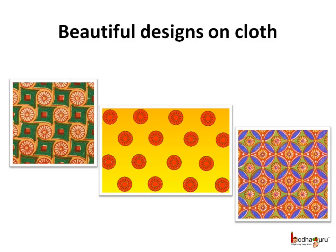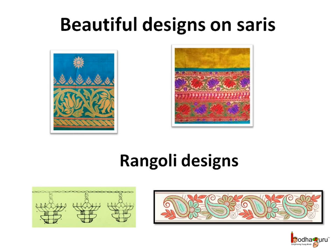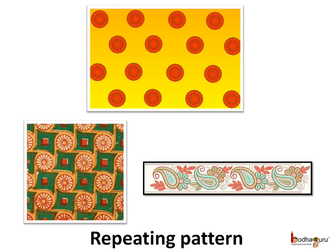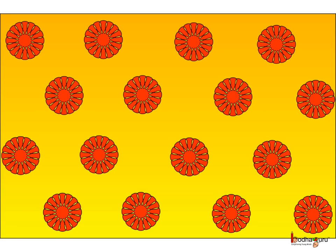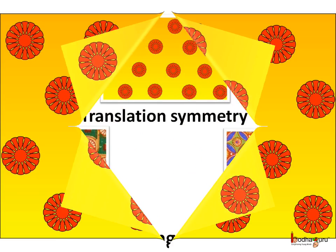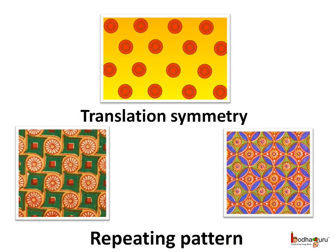Now let us see another kind of symmetry. We see many beautiful designs everywhere — like on cloth, in sarees, in rangoli designs, and in different art pieces like paintings. Most designs look very beautiful but also complicated. But if we look closely, they are generally simple. Some designs are made by repeating the same object or pattern. When a pattern or a design is made by sliding or moving an original figure repeatedly, we say that design has translation symmetry.